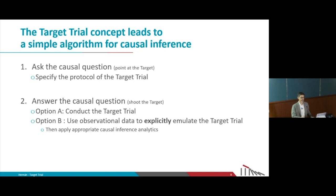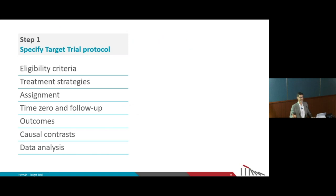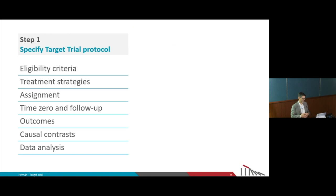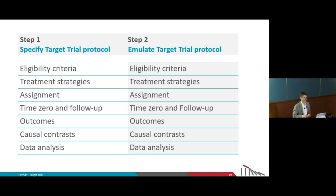The components of a target trial protocol are the same as any randomized trial: eligibility criteria, treatment strategies, how treatment is assigned, the start and end of follow-up, the outcomes of interest, the causal contrast — whether this is an intention-to-treat effect or a per-protocol effect — and of course the data analysis. Once we've specified these things for the target trial, we use observational data to emulate each component explicitly.